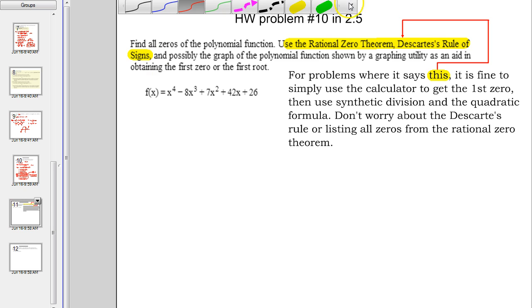So what I got written here is when you see this as your instructions, just don't worry about using all these different methods. Just use your calculator. Possibly the graph of the polynomial, use that table feature in your calculator to find the zero.